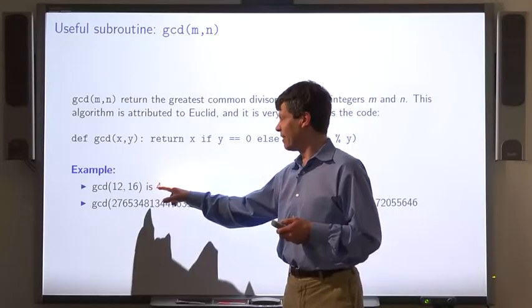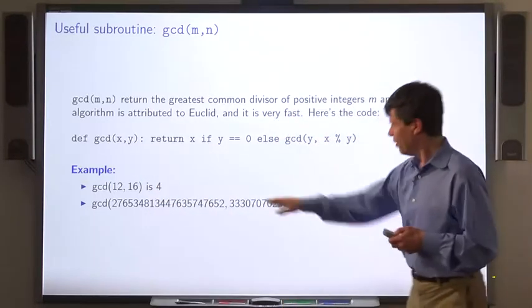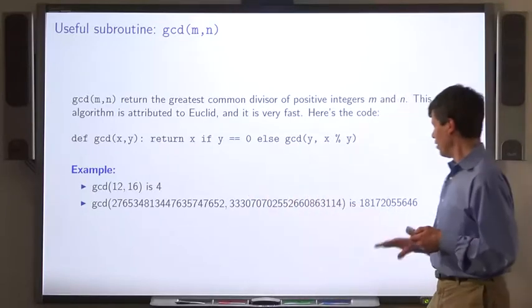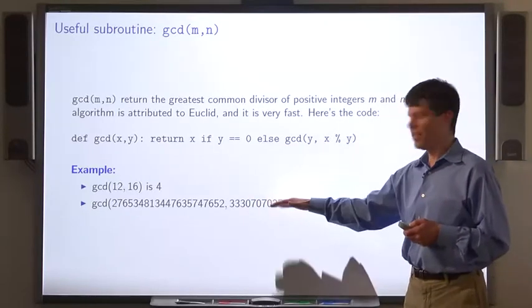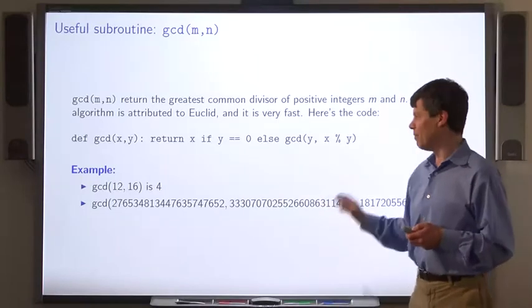And the GCD of these two long numbers is this number. You can run this, it'll take very little time to compute this.